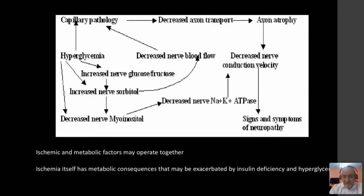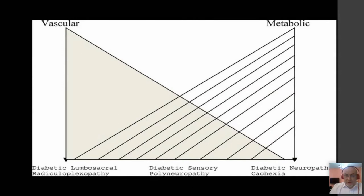Some types of diabetic neuropathy, like diabetic cachexia, are mainly related to metabolic dysfunction, while diabetic lumbosacral radiculoplexopathy has an almost purely vascular or ischemic pathogenesis.